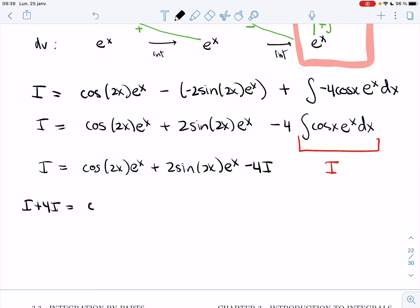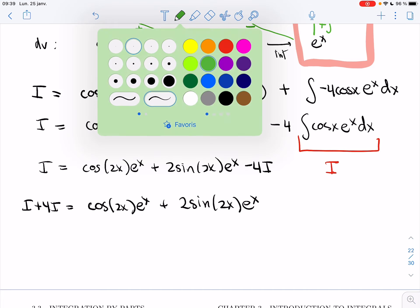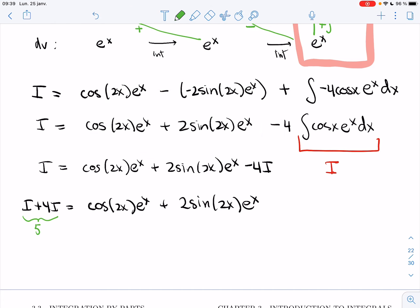That's equal to cos(2x)e^x + 2sin(2x)e^x. All right, so I'm getting 5I right here. And so if I just want I, I'm going to divide both sides by five, and I'll get cos(2x)e^x + 2sin(2x)e^x over 5.